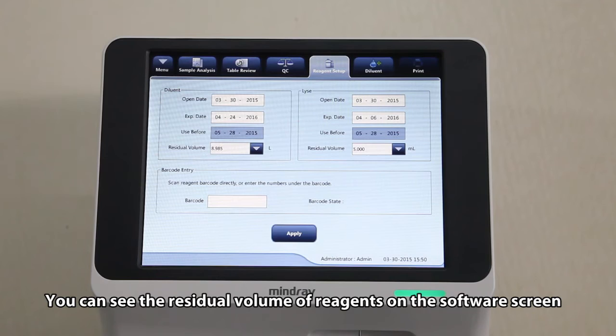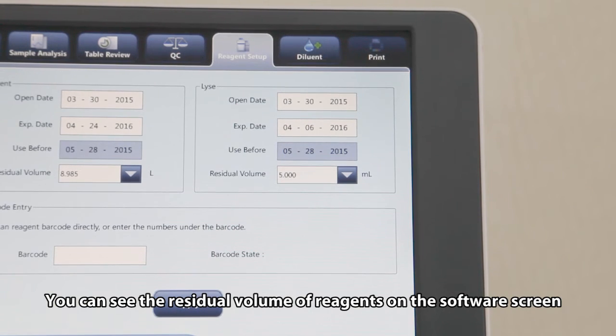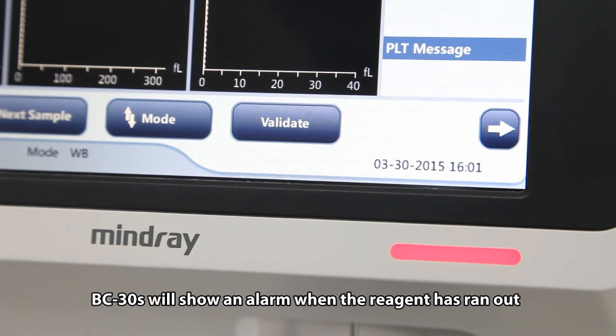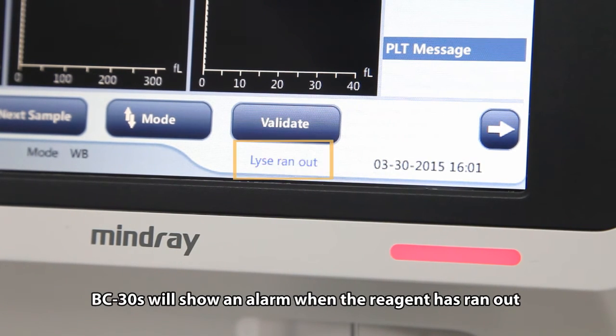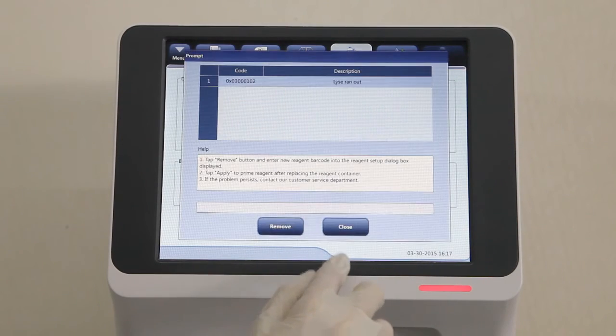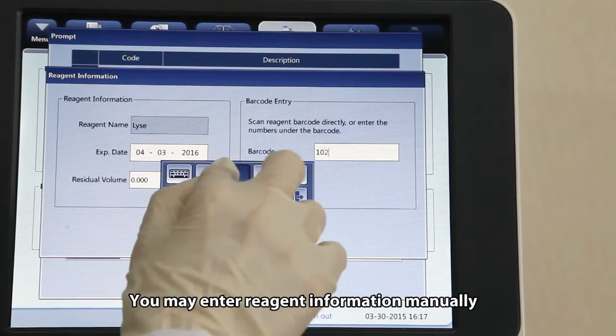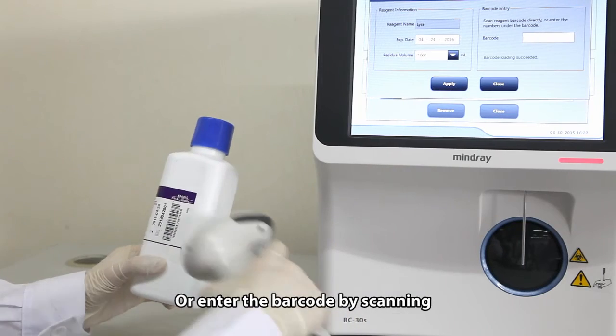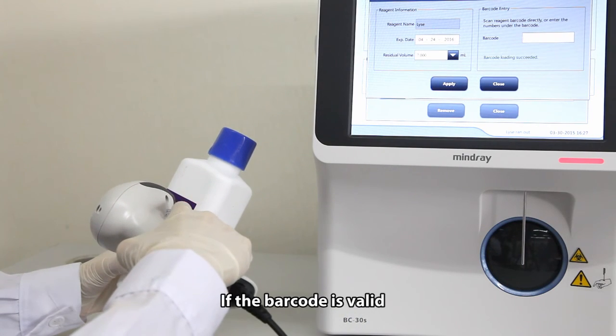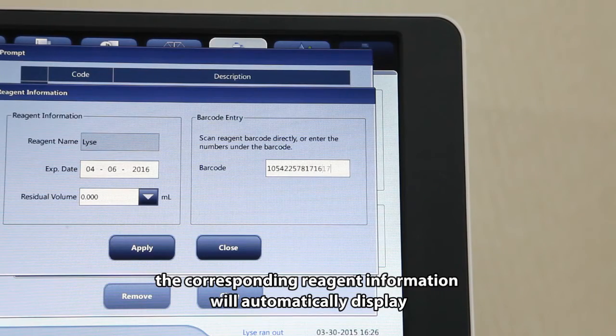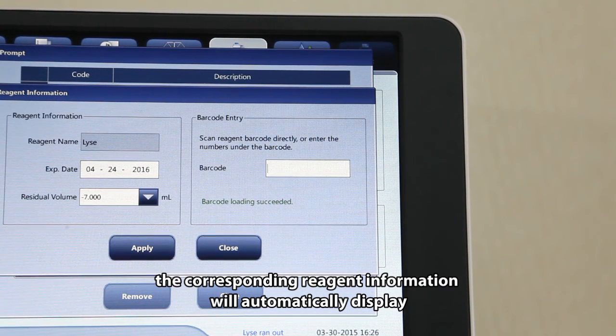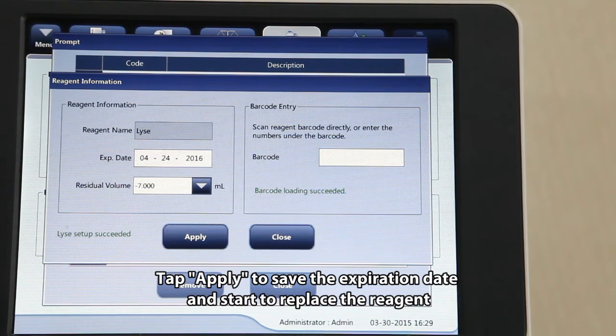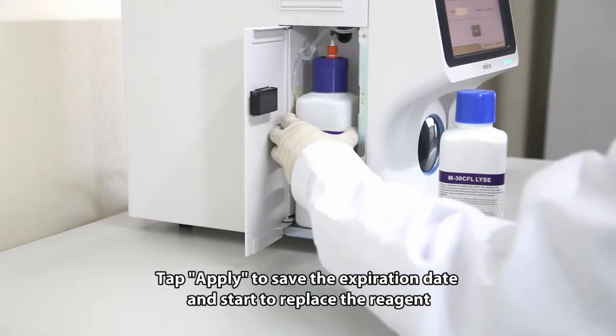You can see the residual volume of reagents on the software screen. BC-30S will show an alarm when the reagent has run out. You may enter reagent information manually or enter the barcode by scanning. If the barcode is valid, the corresponding reagent information will automatically display. Tap Apply to save the expiration date and start to replace the reagent.